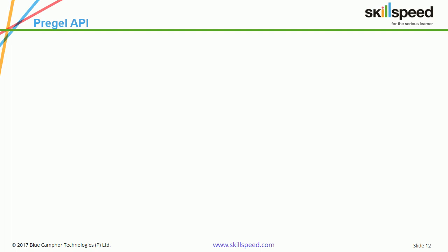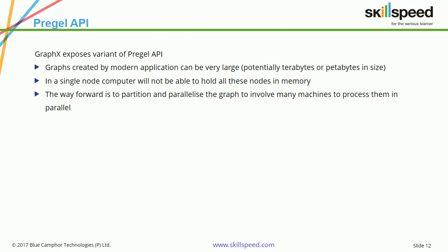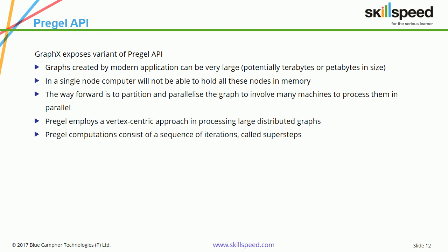Let's have a quick look at the Pregel API. GraphX exposes variants of the Pregel API. Graphs created by modern applications can be very large — for example, a Twitter graph showing a celebrity and all followers and retweets can be enormous. A single-node computer cannot hold all this in memory. The way forward is to partition and parallelize the graph across many machines for parallel processing. Pregel is an API with a vertex-centric approach for processing large distributed graphs, where computations are a set of iterations called supersteps.